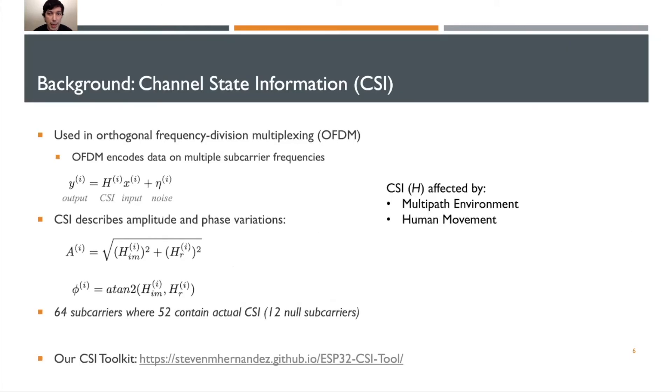So let's look at CSI, maybe that can help us instead. Here's more background on CSI. CSI is a metric used in orthogonal frequency division multiplexing, or OFDM. OFDM is used in Wi-Fi systems to encode data on multiple frequencies so we can transmit multiple symbols in parallel.